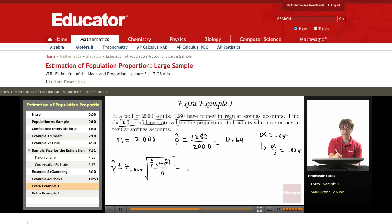So we have p hat is 0.64 plus or minus for the 95% confidence interval. That means z is going to be 1.96. And then we take the square root of 0.64 times 1 minus 0.64 which is 0.36 divided by 2,000.